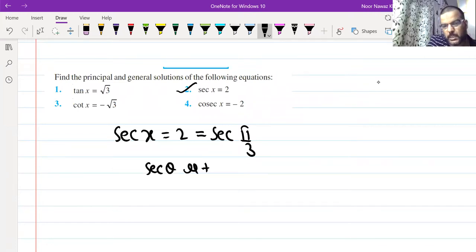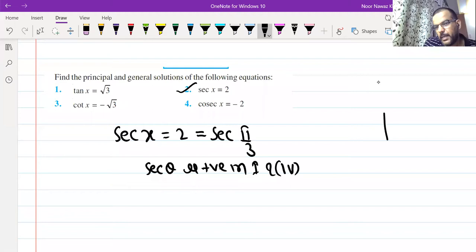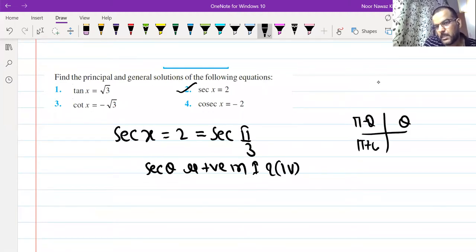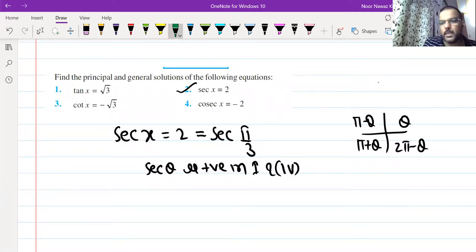sec theta is positive in first and fourth. I have to tell you that first is theta, second is pi minus theta, third is pi plus theta, fourth is 2 pi minus theta. So first is theta, fourth is 2 pi minus theta.